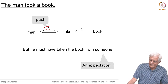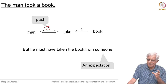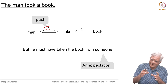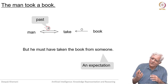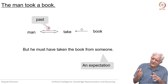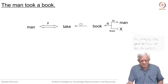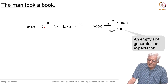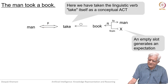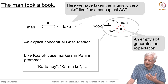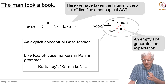He must have taken the book from someone, so we expect that there is some missing information. Conceptual dependency has predefined dependencies which create slots, which in some sense create the expectations that something will fill the slot. There is an empty slot which we can expect we will be able to fill with something else.